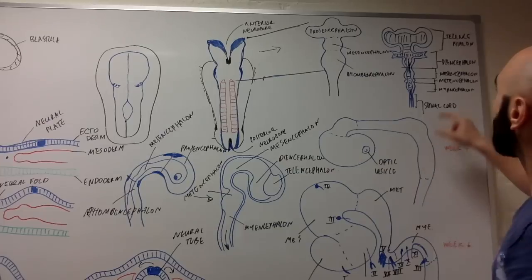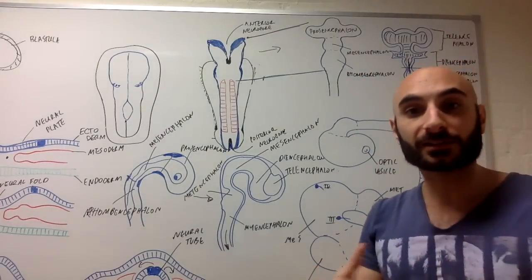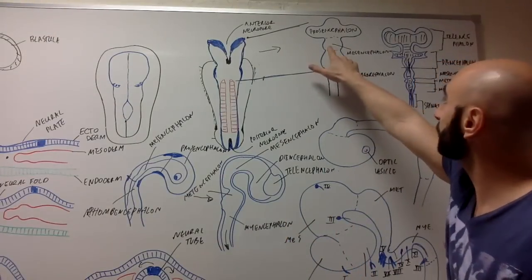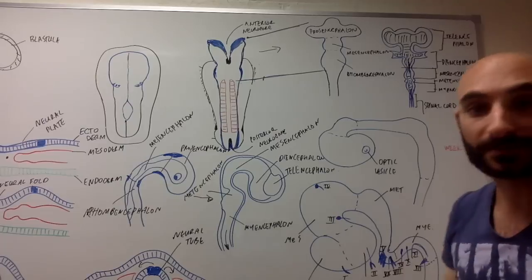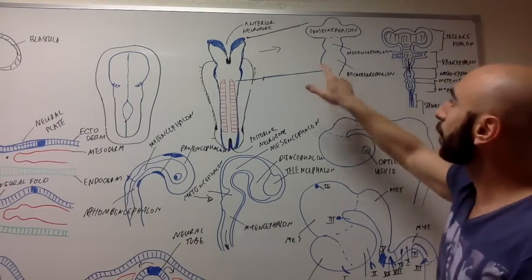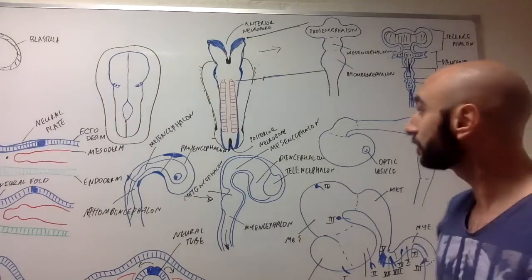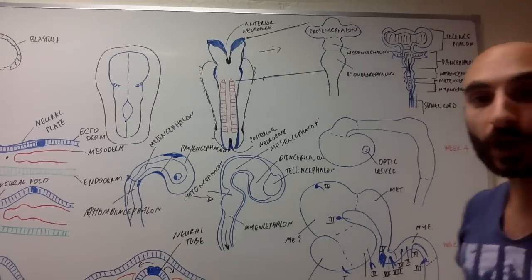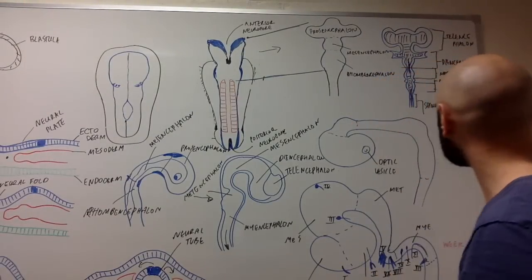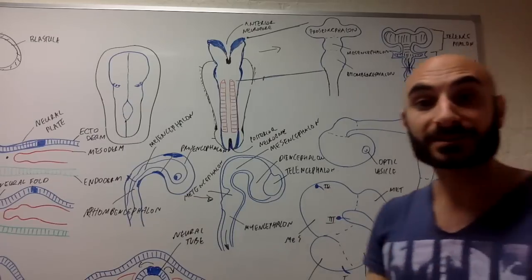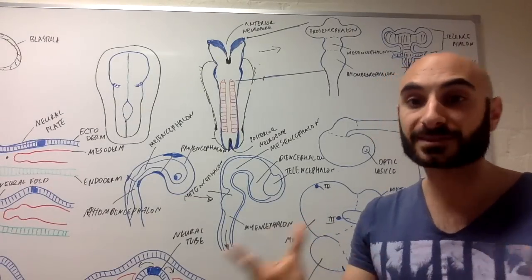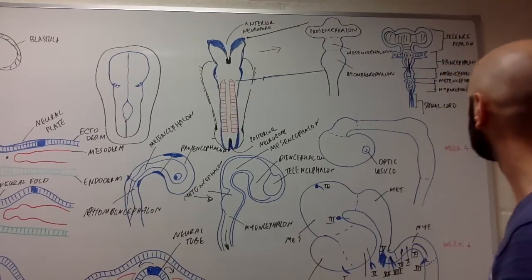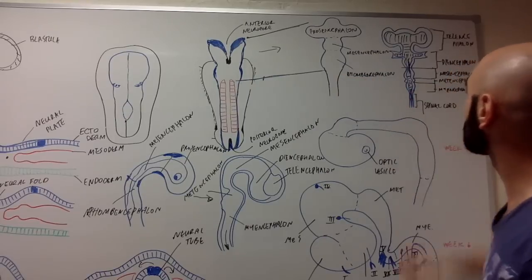The mesencephalon doesn't differentiate into any other structures — it remains the mesencephalon and becomes your midbrain. The rhombencephalon, your hindbrain, differentiates into two more parts: the metencephalon, which becomes the pons and cerebellum, and the myelencephalon, which becomes the medulla oblongata. And at the bottom, of course, we have the spinal cord.